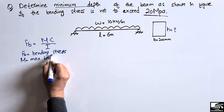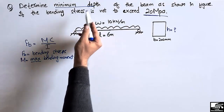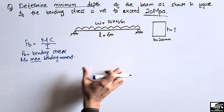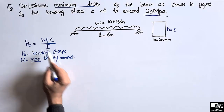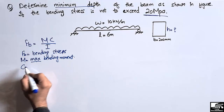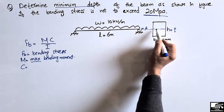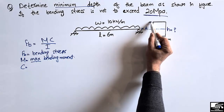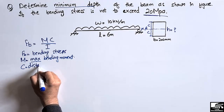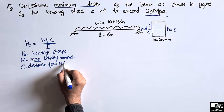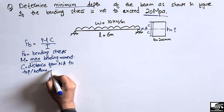M will be the maximum bending moment, because the maximum bending moment is related to the minimum depth of the beam. C is the distance from the neutral axis up to the top or bottom of the beam — that is, to the extreme fiber of the beam.